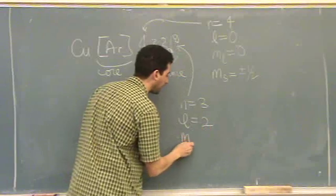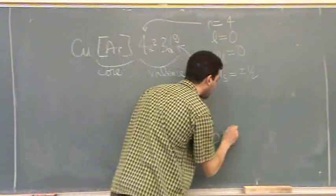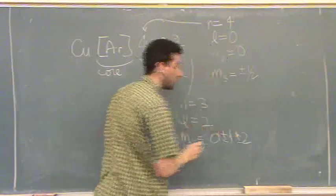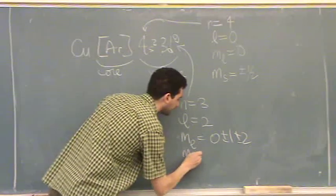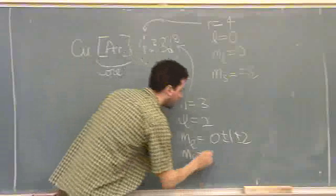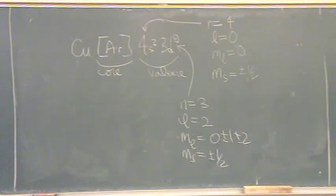And then, M sub L. Zero, plus or minus 1 and plus or minus 2. Any of those values are possible based on which D orbital it is. And then, M sub S. Yeah, plus or minus one half depending if it's up or down spin.